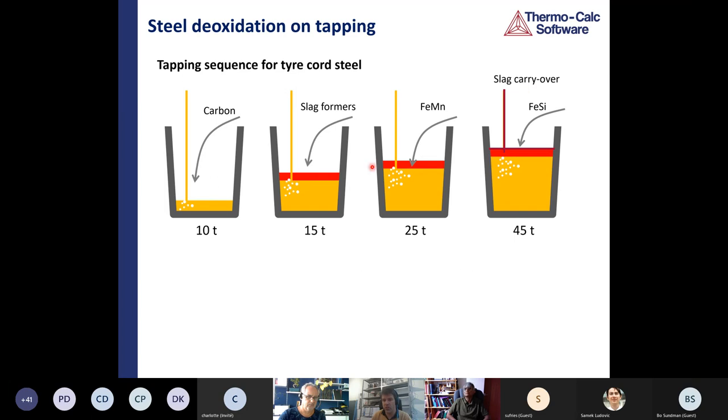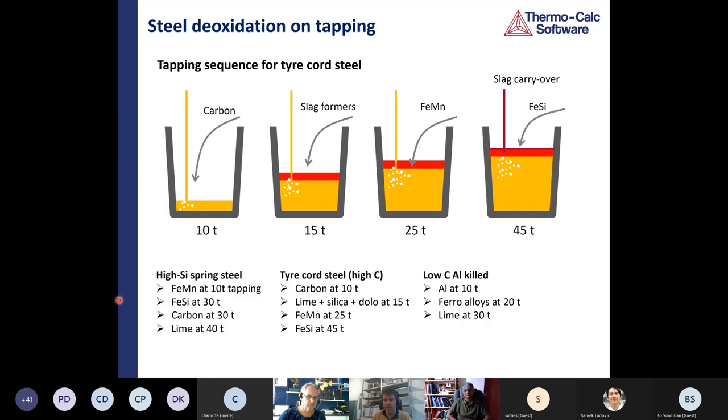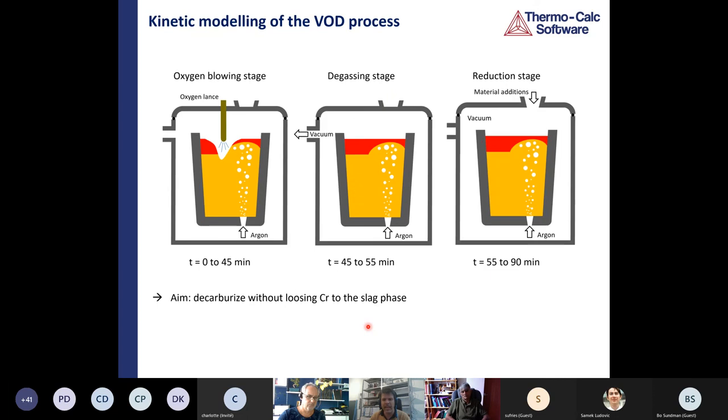These sort of simulations can be done for all sort of different steel grades. High spring steel has one sort of recipe, tire cord, a different recipe, low carbon aluminium killed. Again, a different recipe. And you can perform these simulations and see if the sequence that you might just be doing without really understanding why you're doing it is the optimal sequence, or if it can be improved in any way.